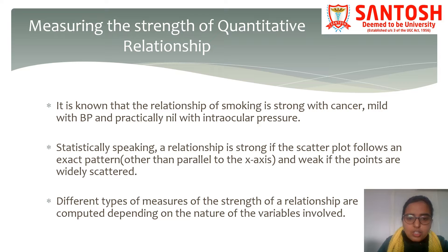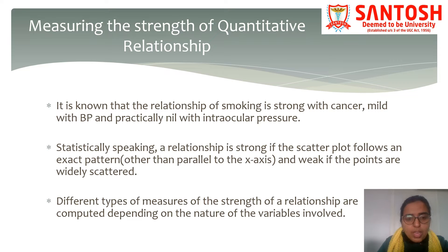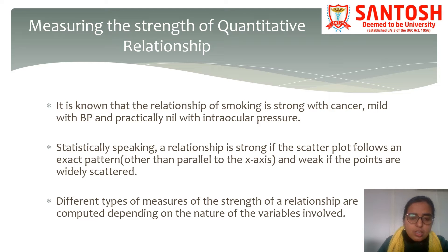Statistically speaking, a relationship is strong if the scatter plot follows an exact pattern and weak if the points are widely scattered. If you have studied graphical presentation of data, you are aware about the scatter plot in which there are two variables plotted on the two axes in the graph. If these scatter plots show a pattern, then there could be a relationship between the variables. However, if there is no pattern, you can conclude that there is no relationship between those two variables.